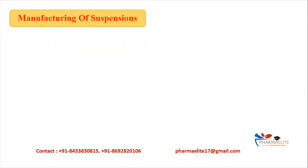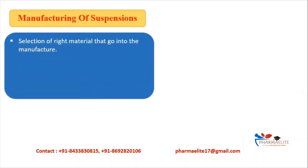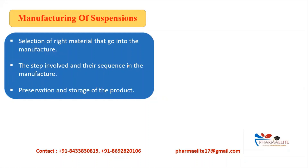Now we are going to study the manufacturing of suspension. Let's first look at some criteria for manufacturing. We have to select the right materials considering the incompatibilities of certain ingredients. We also have to look at the preservation and storage of the product, since it can undergo microbial attack, oxidation, or hydrolysis. Proper storage is an important factor to ensure the suspension will have a longer shelf life.